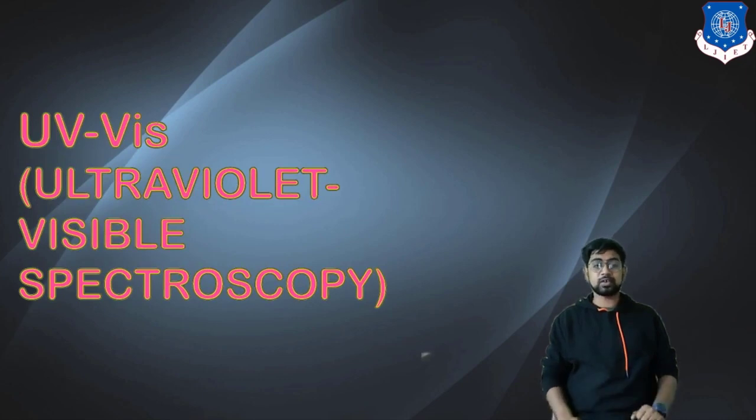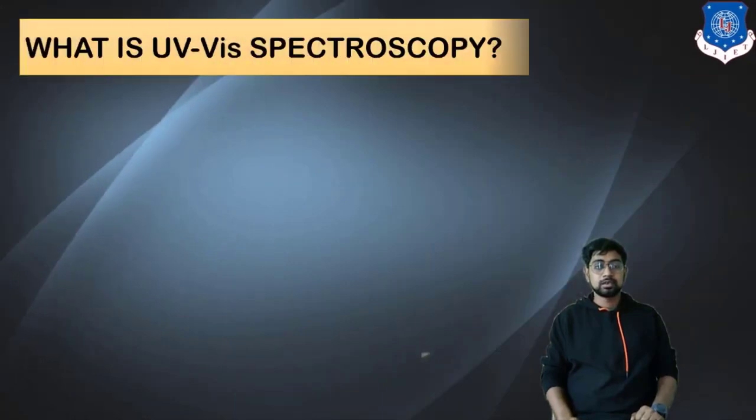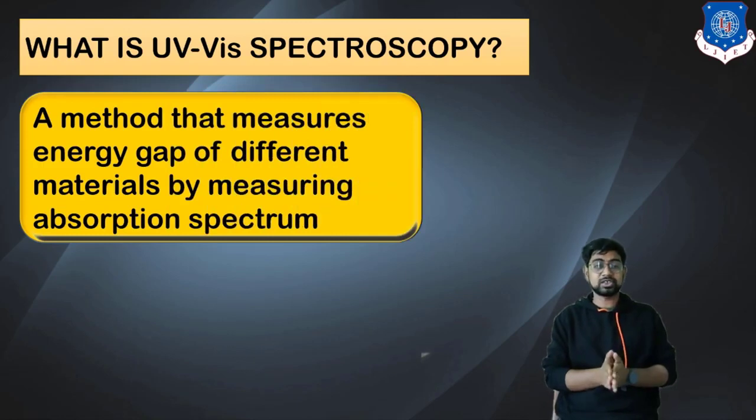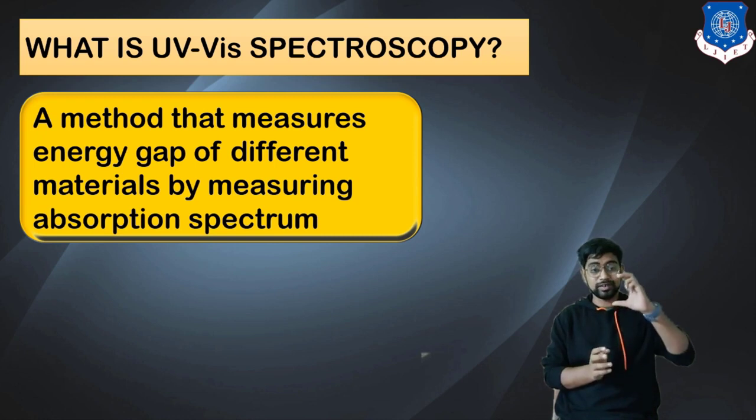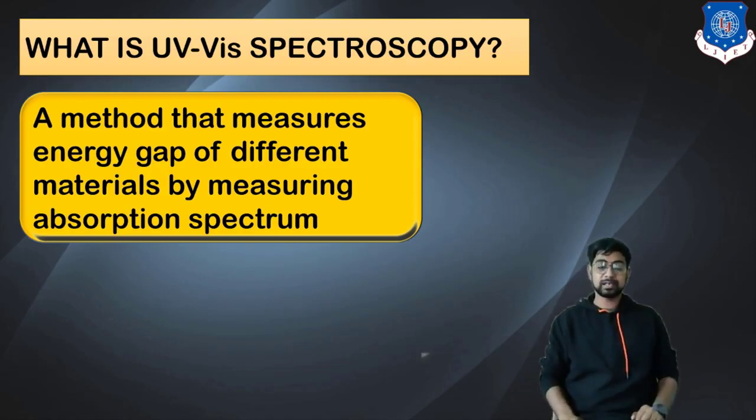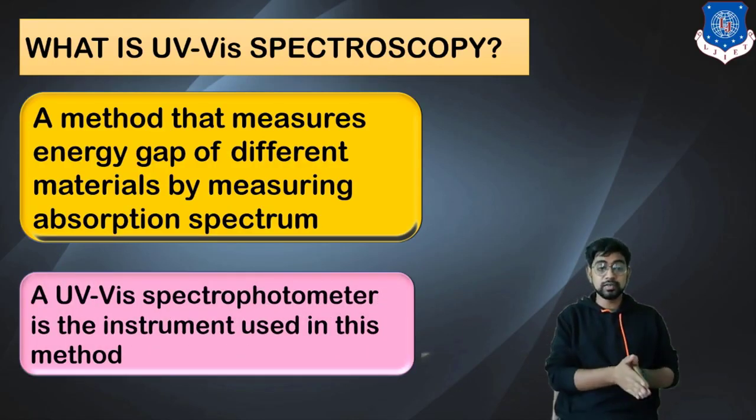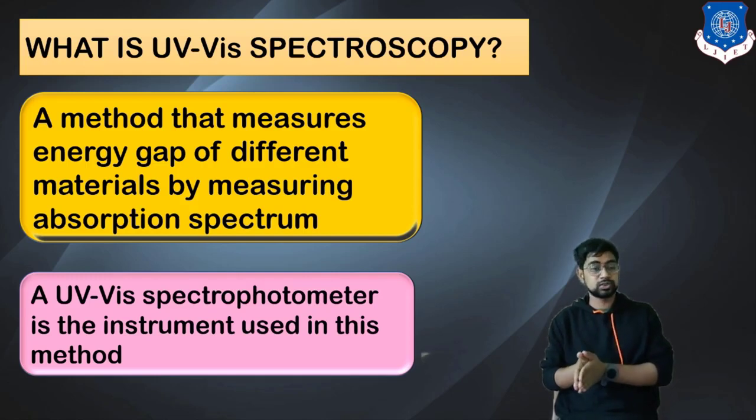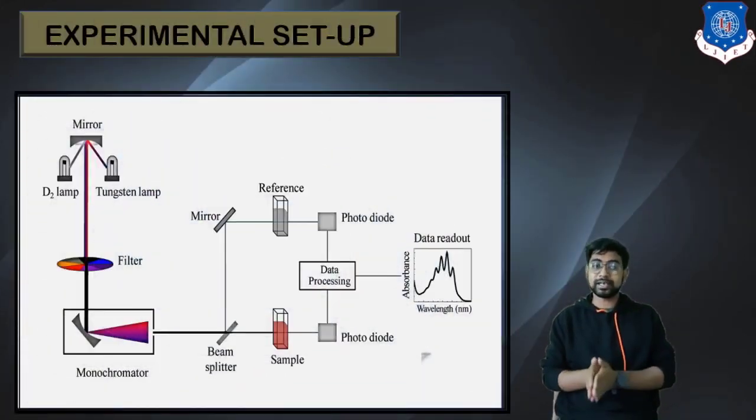The next topic we are going to start is ultraviolet visible spectroscopy. What is UV spectroscopy? It is a method that measures the energy gap between materials by measuring the absorption spectra. We are utilizing how much energy it is absorbing. On that basis we will be calculating the value of the band gap. A UV spectrometer is an instrument that is used in this method. That is the methodology and this is the device that we will be utilizing.